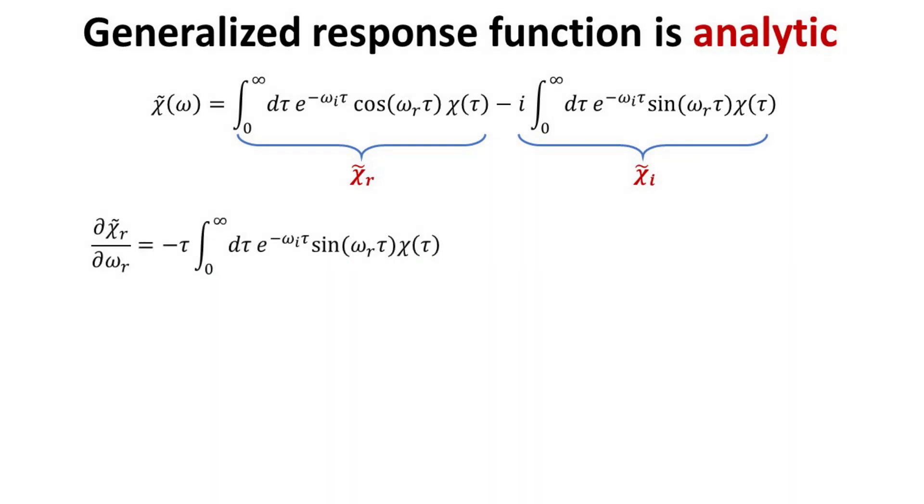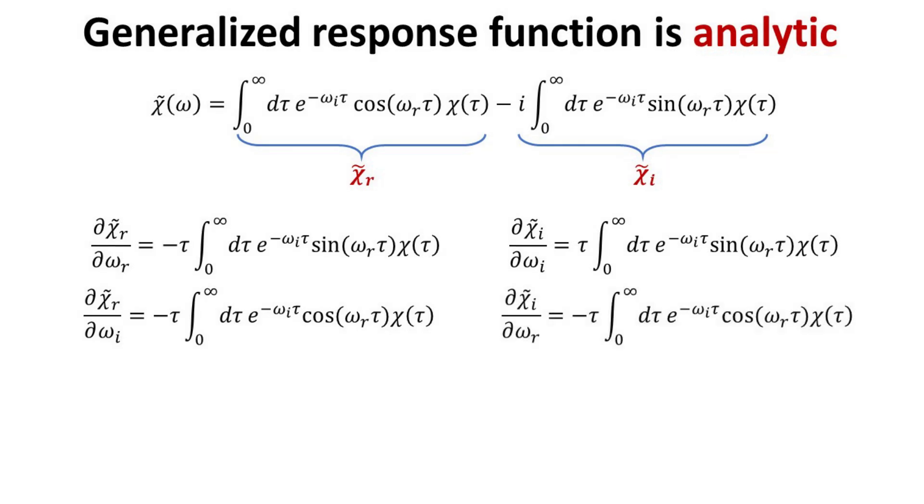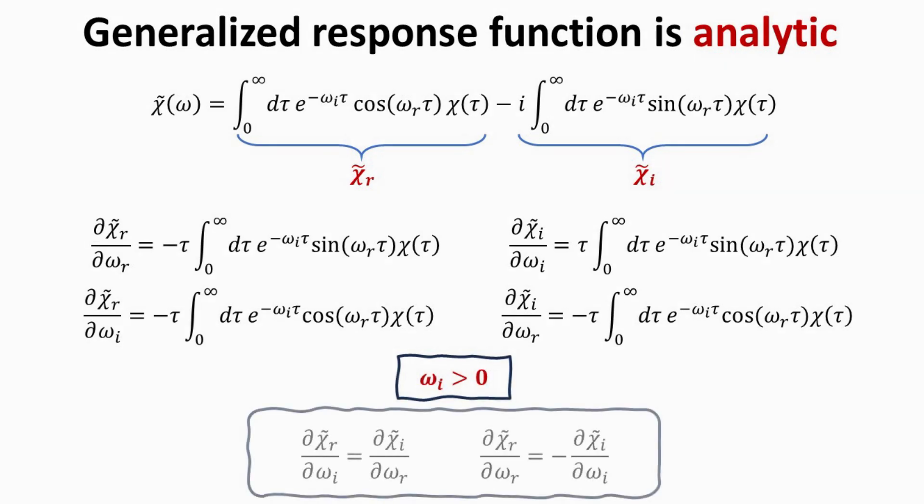Let's work these out one by one. First, the derivative of chi tilde r with respect to omega r. Next, the derivative of chi tilde r with respect to omega i. Next, the derivative of chi tilde i with respect to omega i. And lastly, the derivative of chi tilde i with respect to omega r. For these integrals to be convergent, we need omega i to be positive.